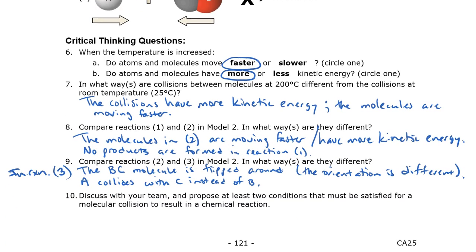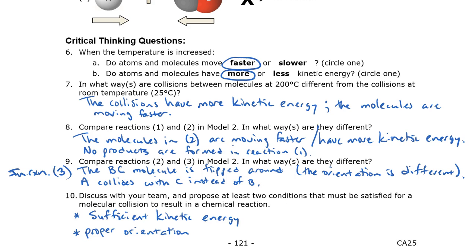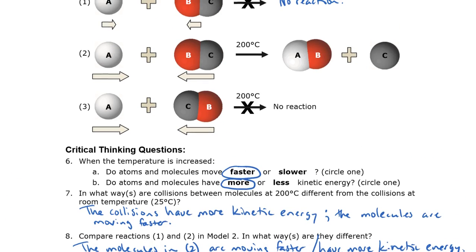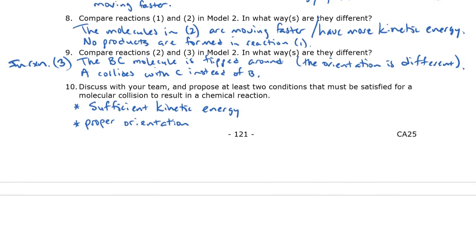Number 10: propose at least two conditions that must be satisfied for a molecular collision to result in a chemical reaction. I made a bulleted list: sufficient kinetic energy — which we noticed when comparing reactions 1 and 2 — and proper orientation — which we noticed when comparing reactions 2 and 3. If you have a partner, I definitely recommend working on these together and then comparing answers.